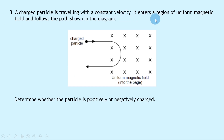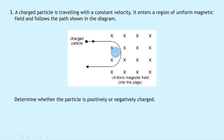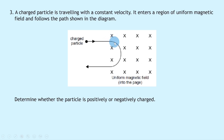Question three: a charged particle traveling with constant velocity enters a region of uniform magnetic field directed into the page, shown by the crosses. It curves and returns the way it came. We need to determine whether the particle is positively or negatively charged. The approach is to use the right hand rule at various points along the curve — if the forces match the right hand rule, the particle is negatively charged; if they're in the opposite direction, it's positively charged.